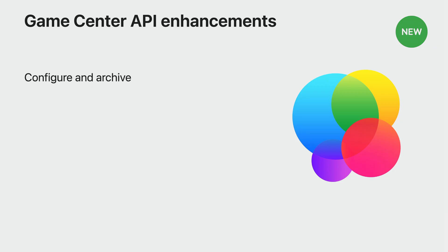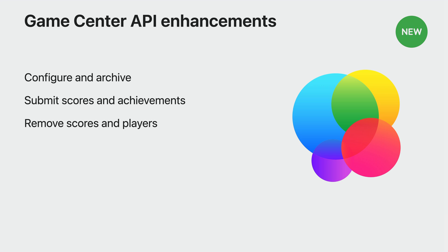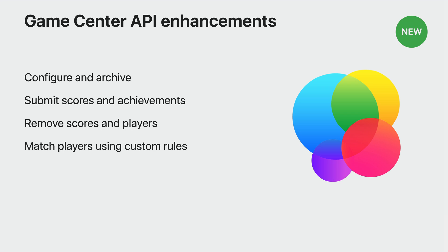Let's go into detail about what these APIs entail. You can create, configure, and even archive leaderboards and achievements just as you would in App Store Connect. Archiving is a new feature to remove leaderboards and achievements from your game. Submit scores and achievement unlock events via a server-to-server API — great if you're a cross-platform game that manages data across many platforms. Remove scores and players from your leaderboards to automate management of fraudulent activity. Last, match players using custom rules like skill level or region with upgrades to our matchmaking capabilities.